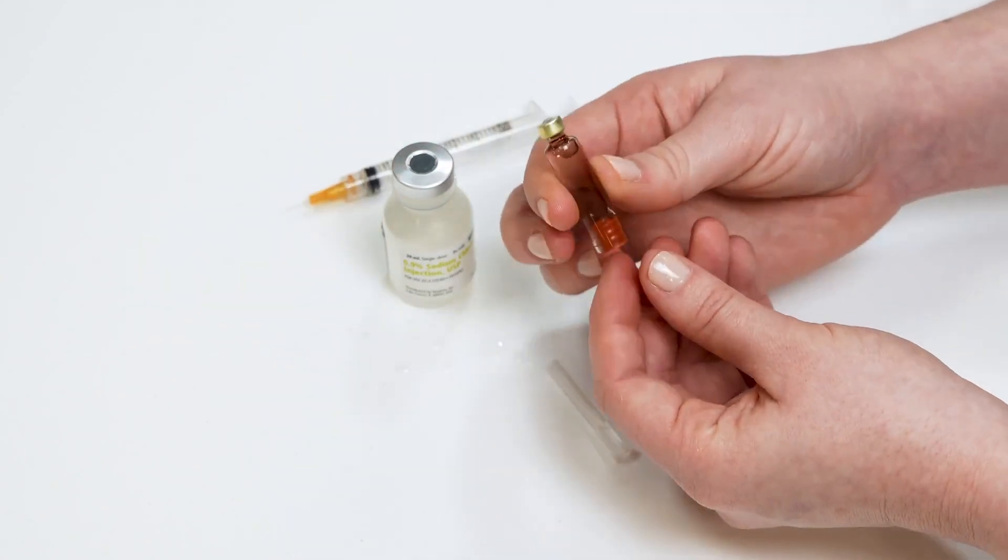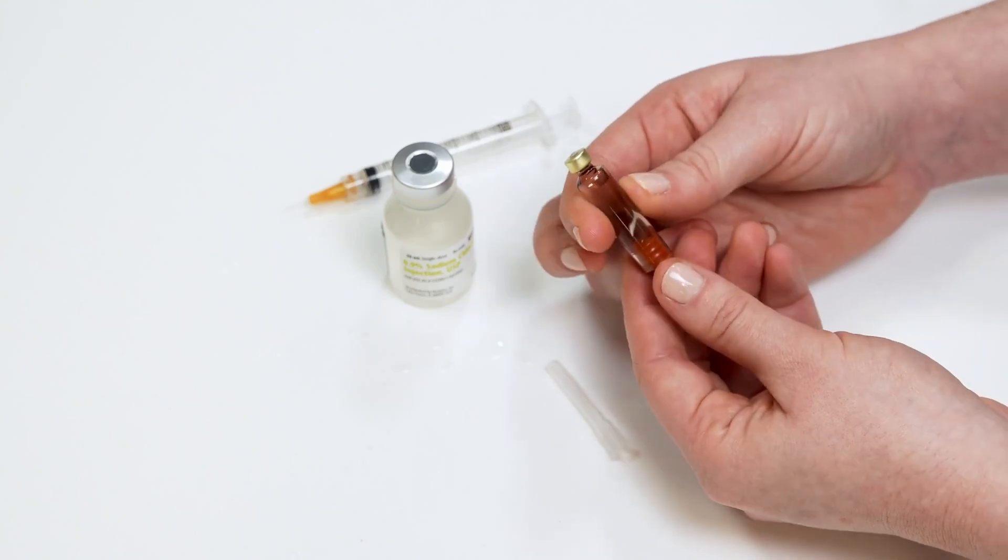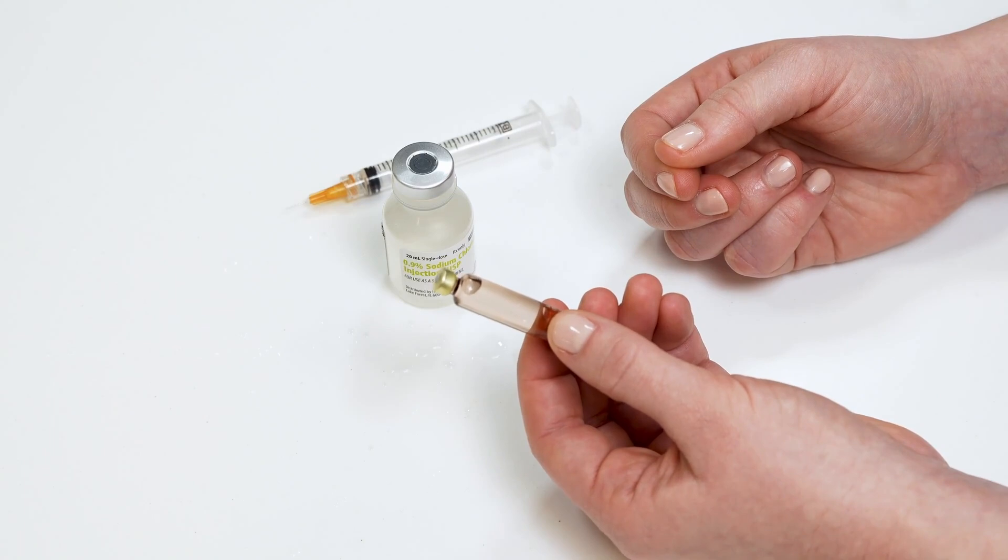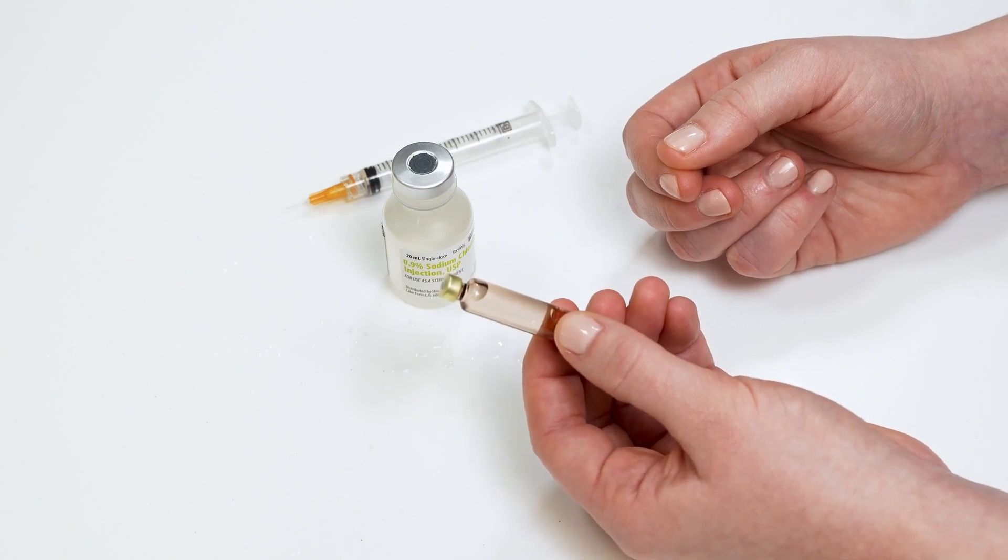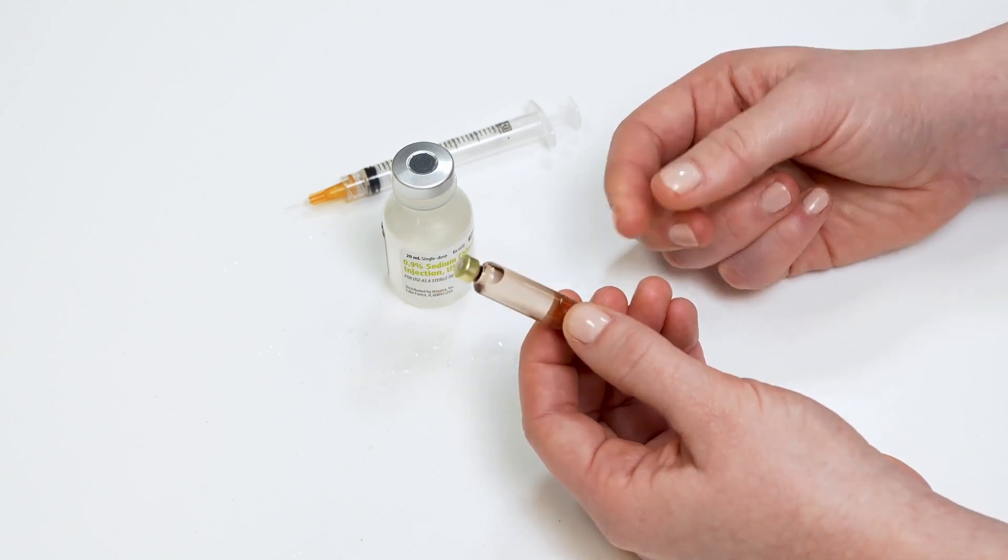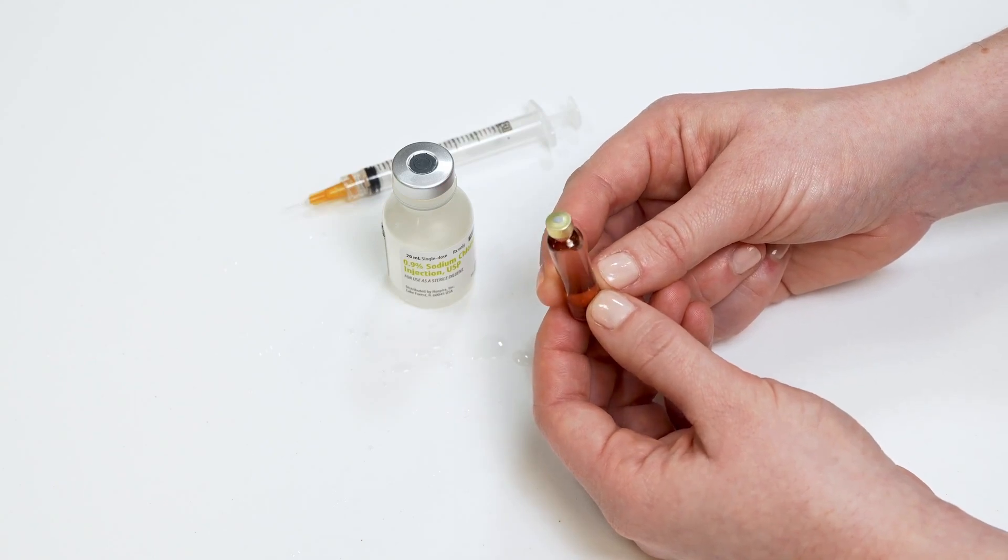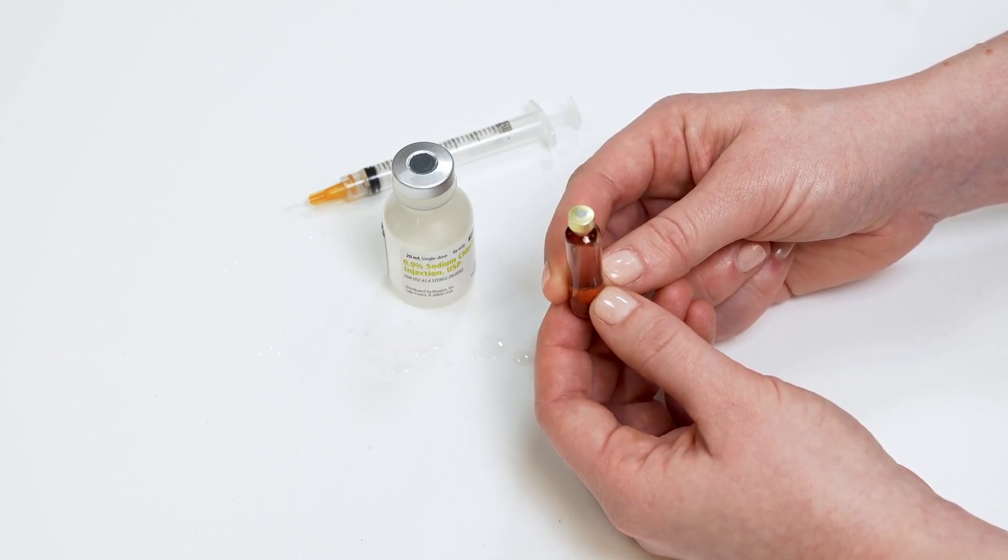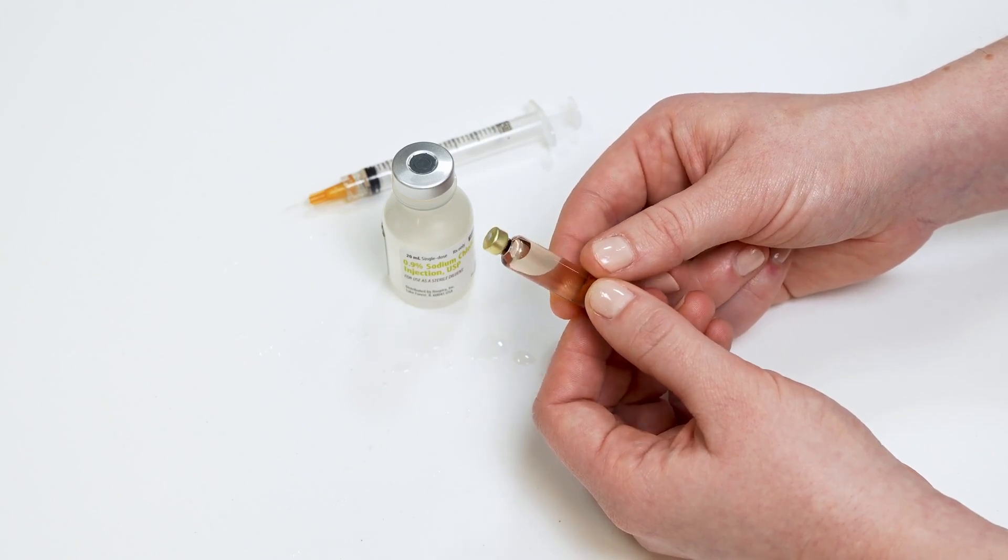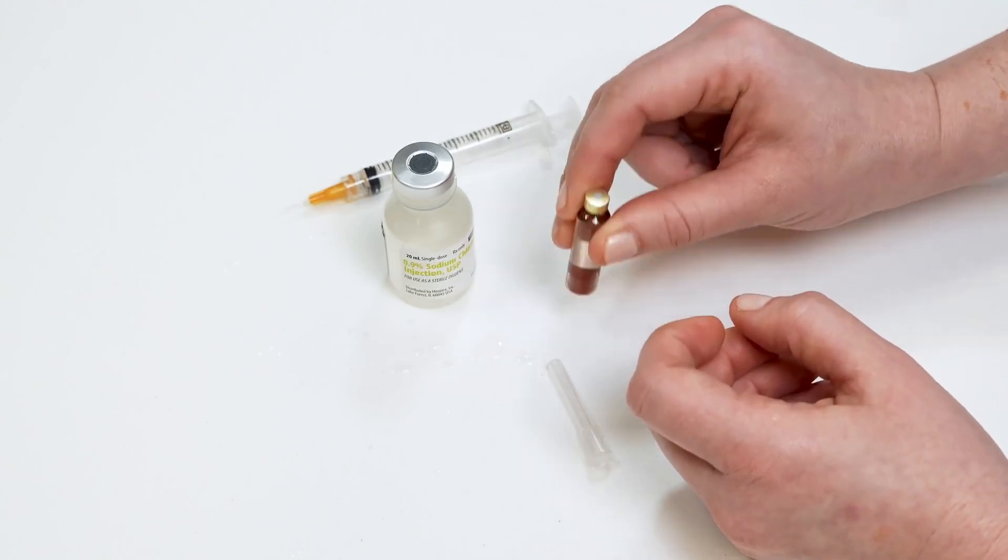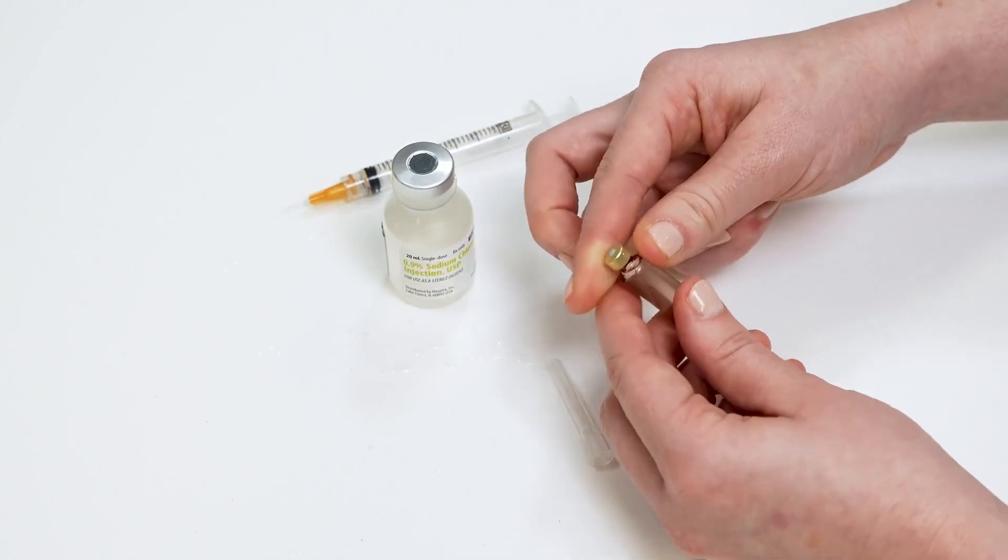Inspect the islet cartridge for any air bubbles. You need to remove large bubbles from your cartridge. Tap your cartridge against the table or with your finger to get the bubbles to go to the top of the cartridge.